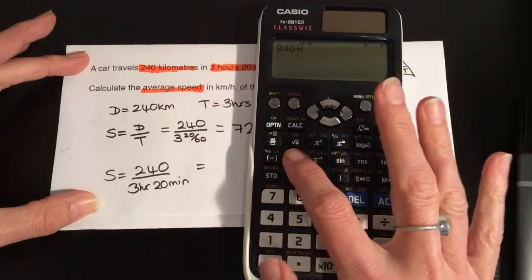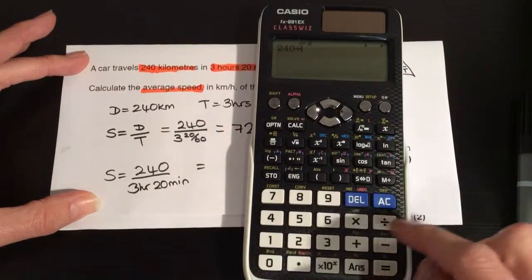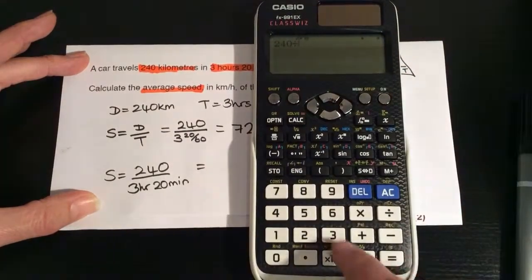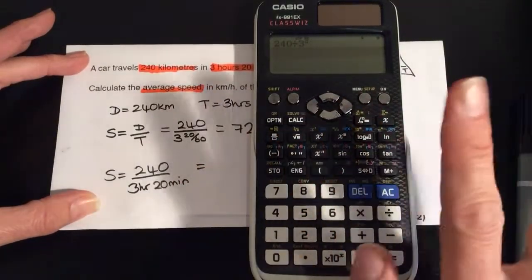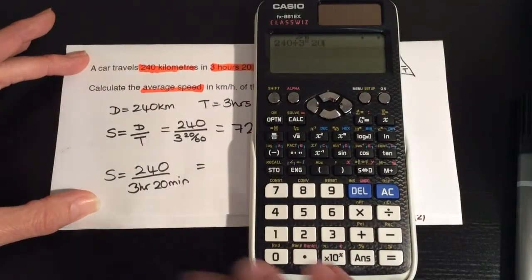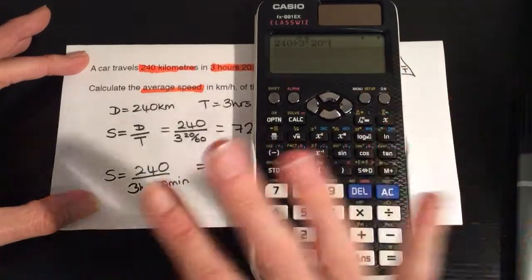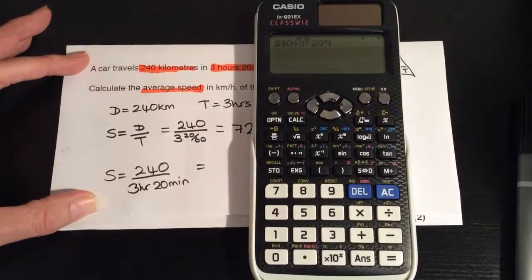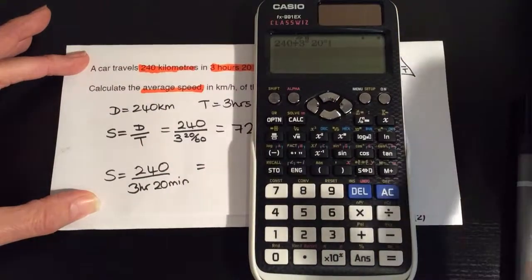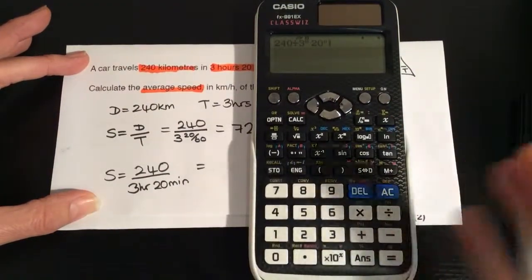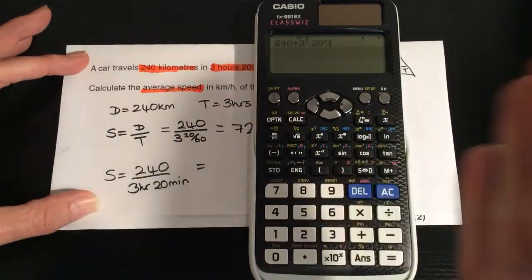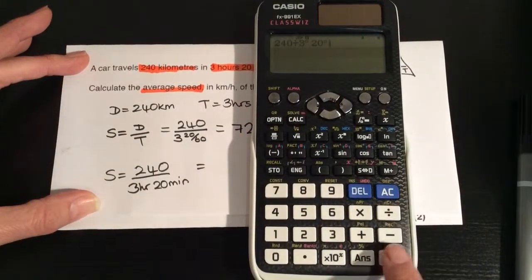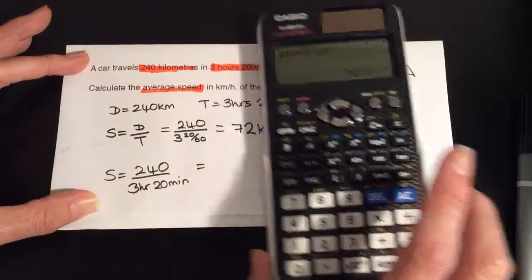So we can put in divided by 3 hours, press the button that separates the hours and the minutes, 20. But most important is you press it again. So that stops us from having to change it into a mixed number. We can automatically put it in as 3 hours and 20 minutes by using this button and separating the hours and the minutes. If we press equals, we get the same answer.